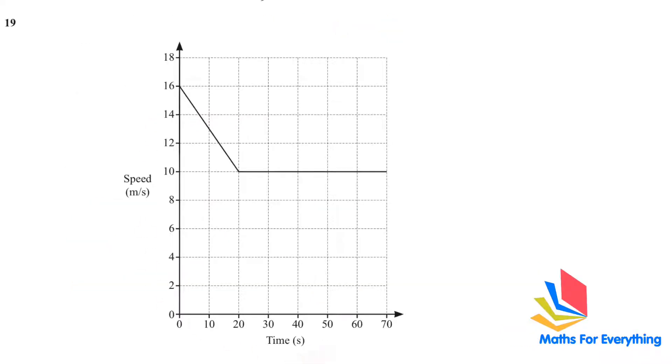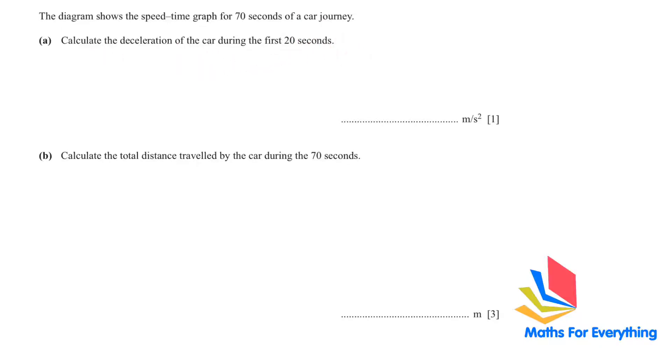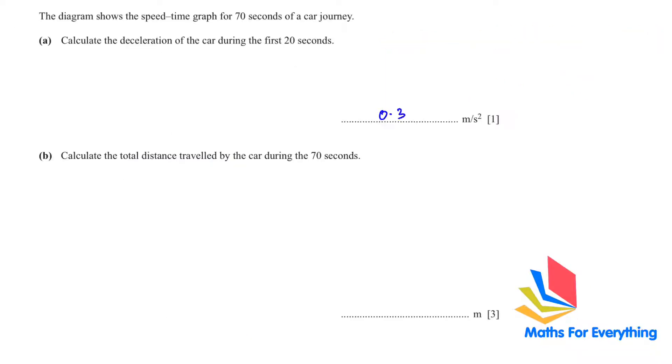Question number 19 is a speed time graph question. The diagram shows the speed time graph for 70 seconds of a car journey. Calculate the deceleration of the car during the first 20 seconds. To find deceleration we use the formula: final velocity minus initial velocity over time taken. So deceleration equals 16 minus 10 over 20, which gives you 0.3 m per second square.